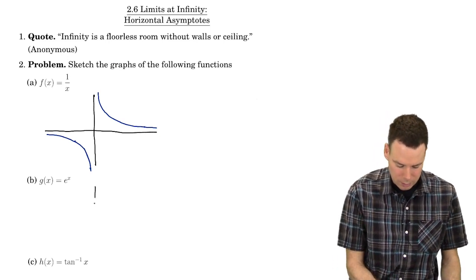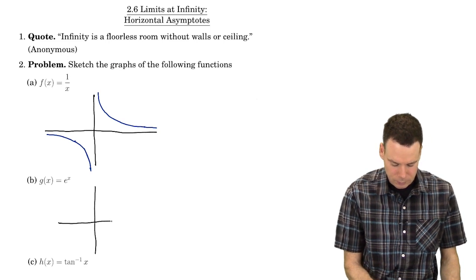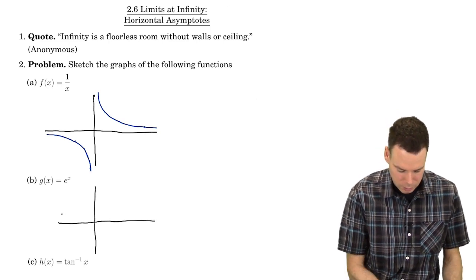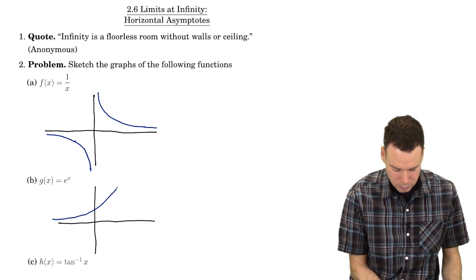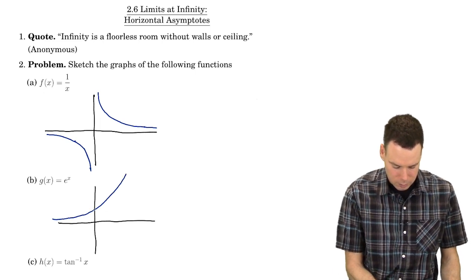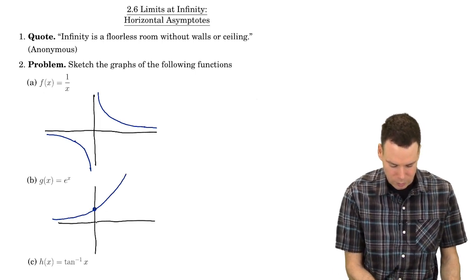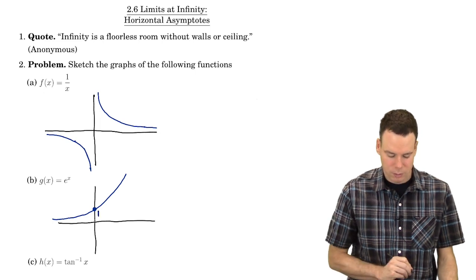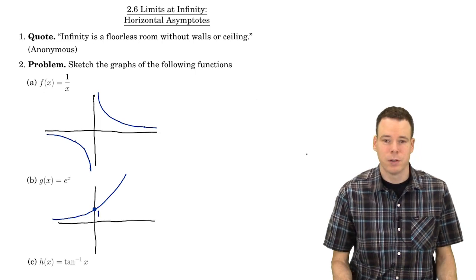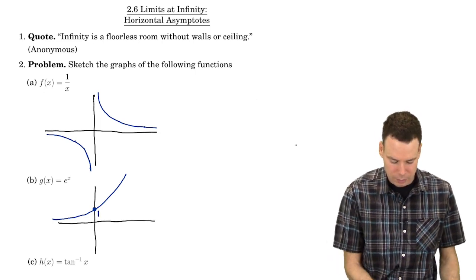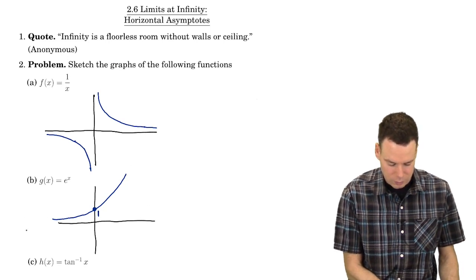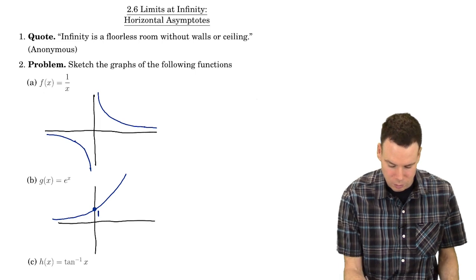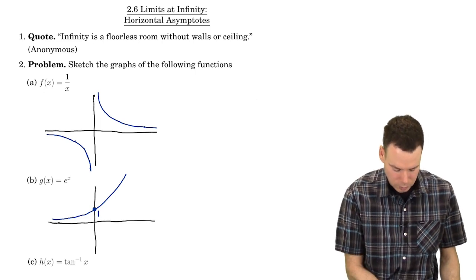What about e to the x? The graph of e^x passes through the y-intercept of 1 when x is 0. As the x values get really big, the function gets really big. As the x values go off to negative infinity, the function values get closer and closer to 0.